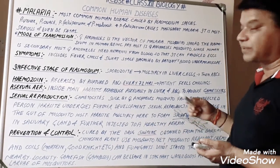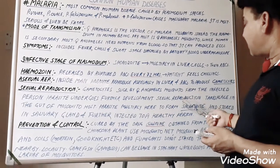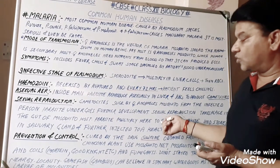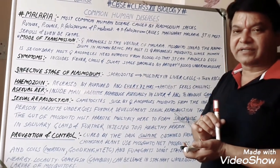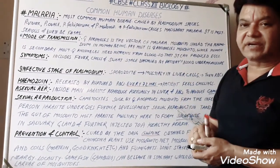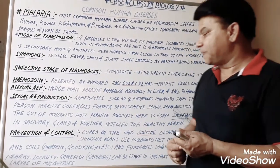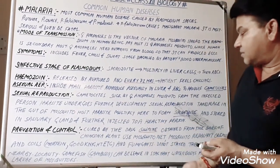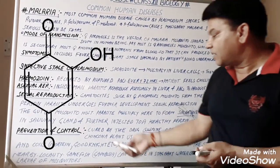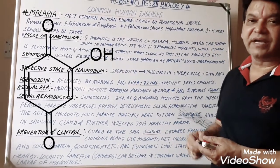When the mosquito carrying sporozoites bites a healthy person, the sporozoites are injected into that person's body. That completes the life cycle. Now, prevention and control of malaria: it is treated by the drug quinine, which is obtained from the bark of the cinchona plant, an American plant.